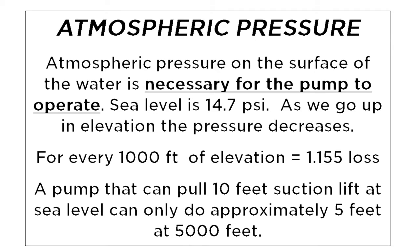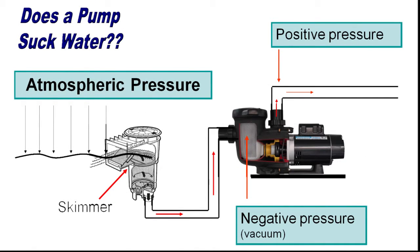Atmospheric pressure on the surface of water is necessary for a swimming pool centrifugal pump to operate. At sea level, the pressure is 14.7 PSI. As we go up in elevation, the pressure decreases. A pump that can pull water up 10 feet at sea level can only do approximately 5 feet at 5,000 feet of altitude. Since we're talking about atmospheric pressure, let's explain how water gets from the pool to the pump. We're going to dispel the notion that pumps suck water.